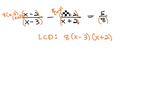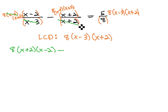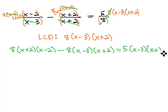8(x-3)(x+2), and 8(x-3)(x+2). When we do that, the (x-3)'s divide out of the first term, giving us 8(x+2)(x-2), minus the (x+2)'s divide out, giving us 8(x-3)(x+2), equals the 8's divide out, giving us 5(x-3)(x+2).